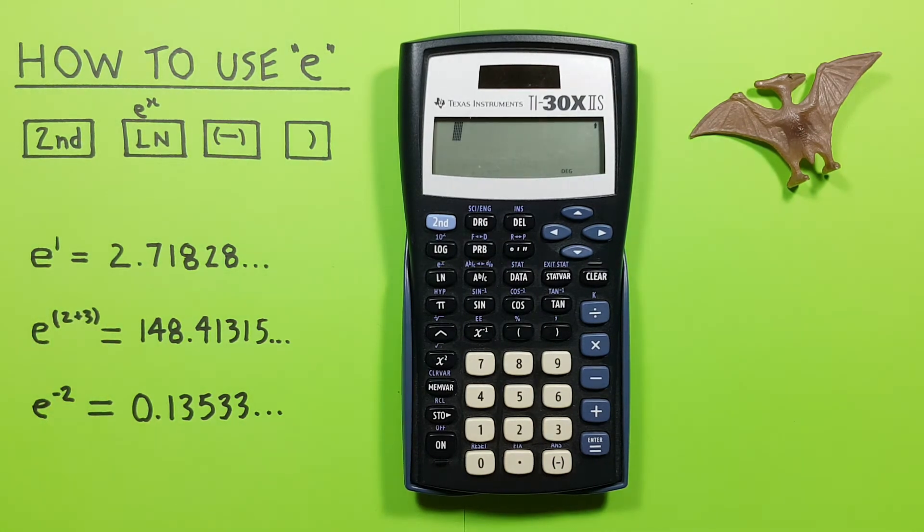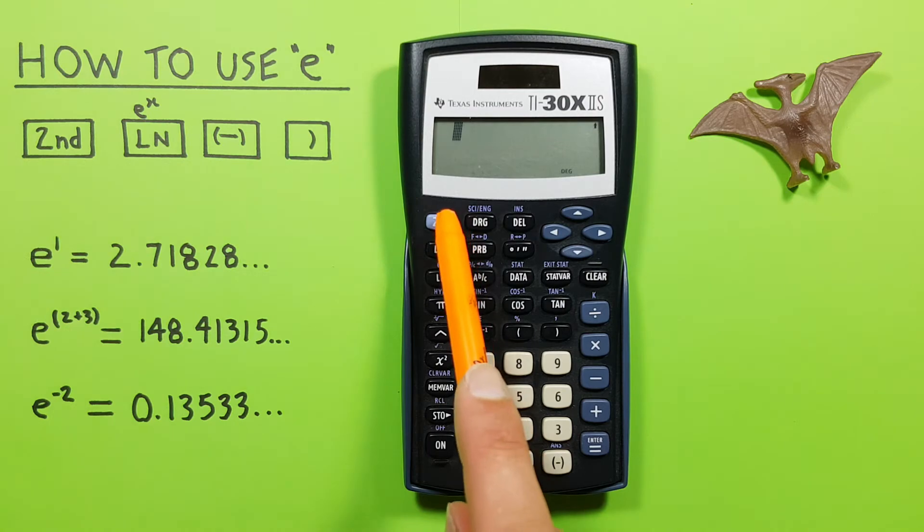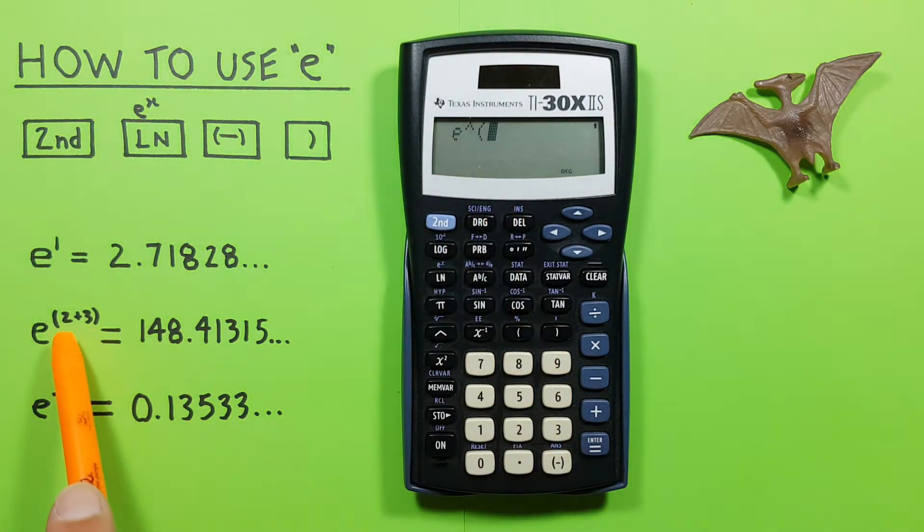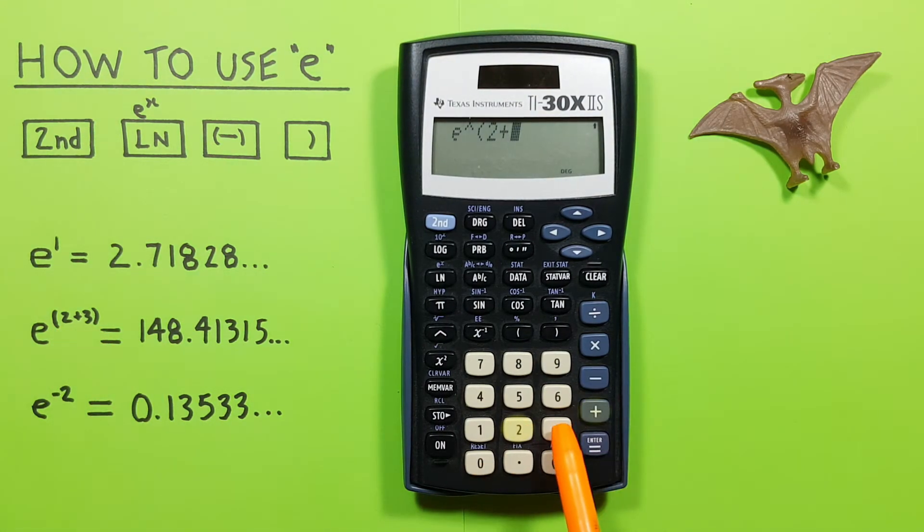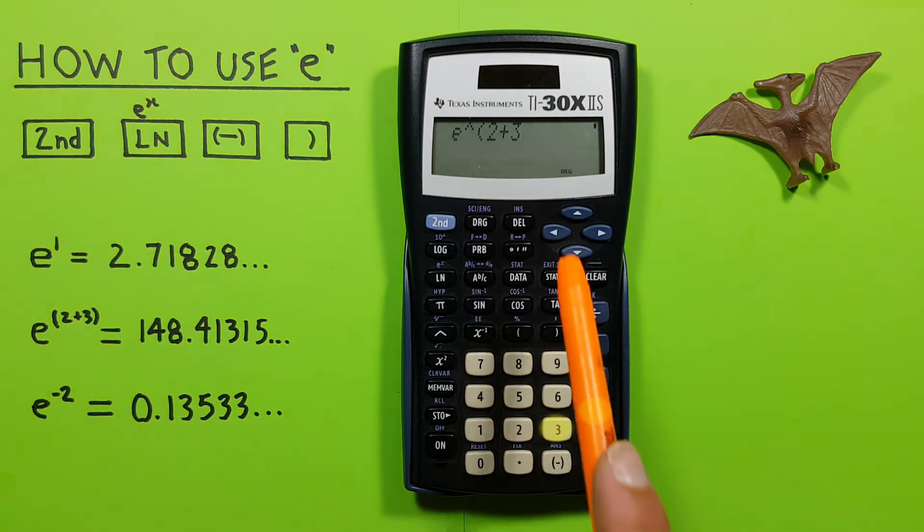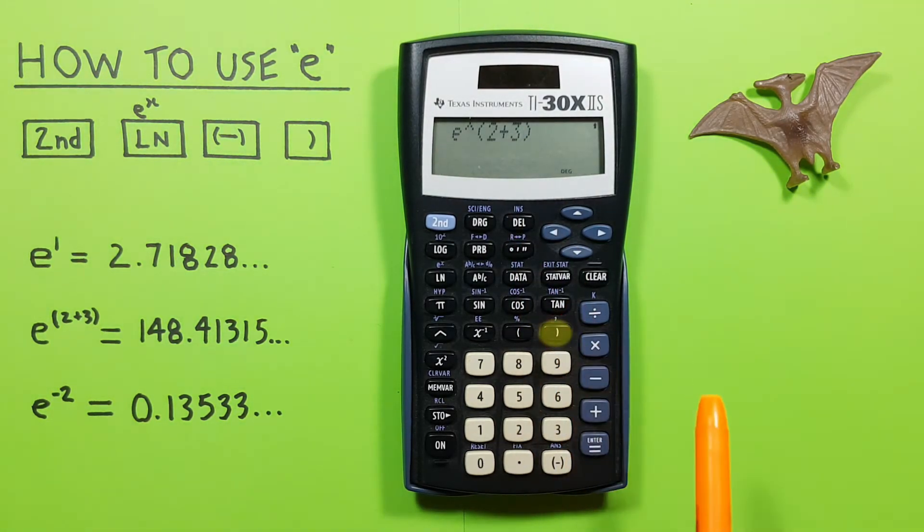If we want to get a more complex exponent, like say E to the power of 2 plus 3, again we press 2nd, ln, to get E on our screen, and then enter our exponent, which was 2 plus 3, and close our bracket, and press equals.